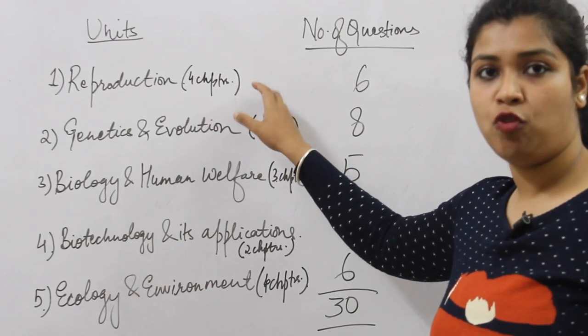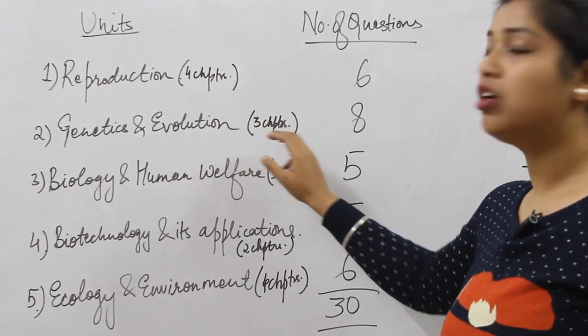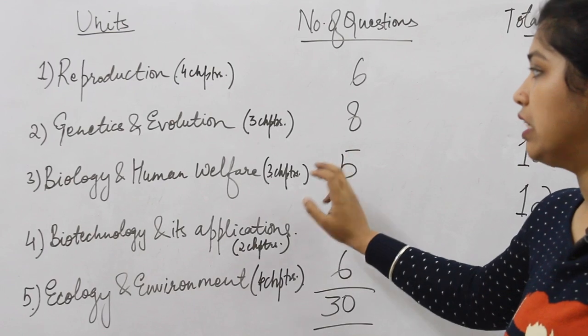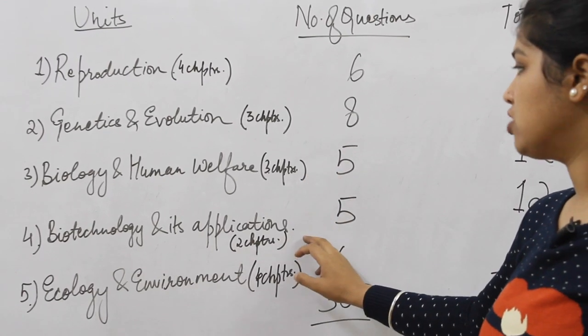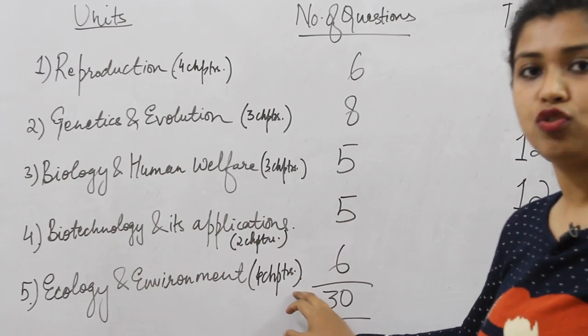In reproduction, we have four chapters. In the second unit, three chapters. In third, three. Next has two and the last one consists of four chapters.